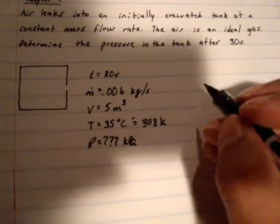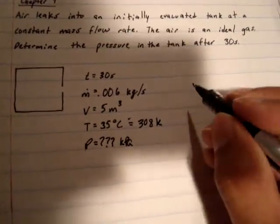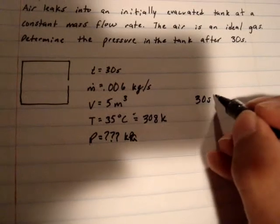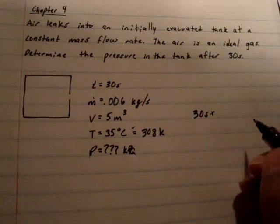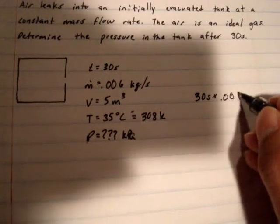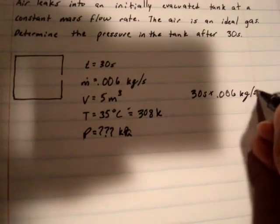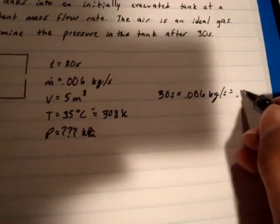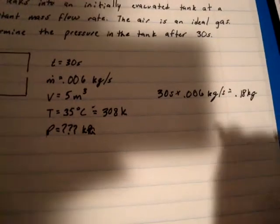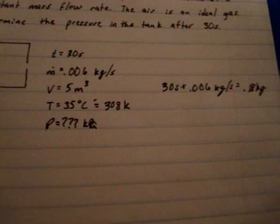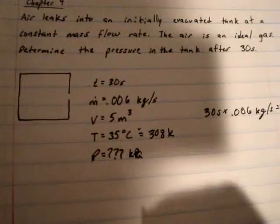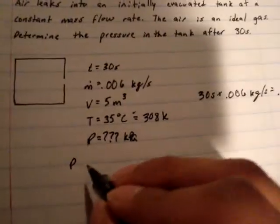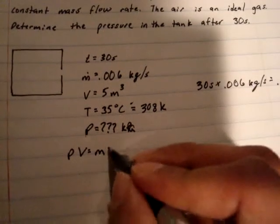Well, to find the mass, first we'll take 30 seconds and multiply it by 0.006. It's going to equal 0.18 kilograms. And it does say ideal gas, so the equation for ideal gas is going to be PV equals MRT.